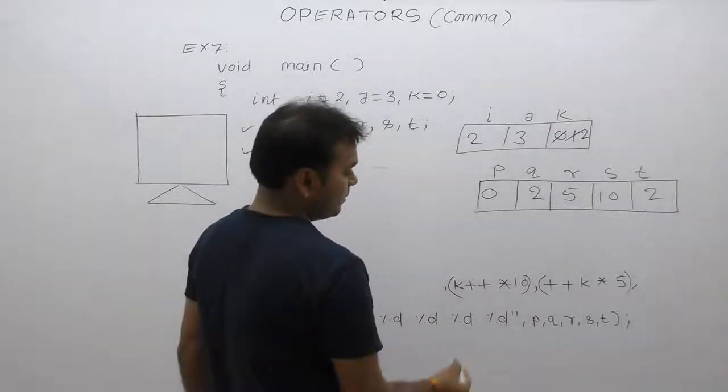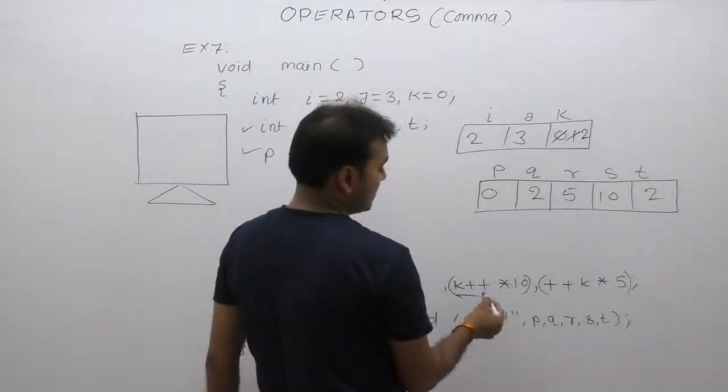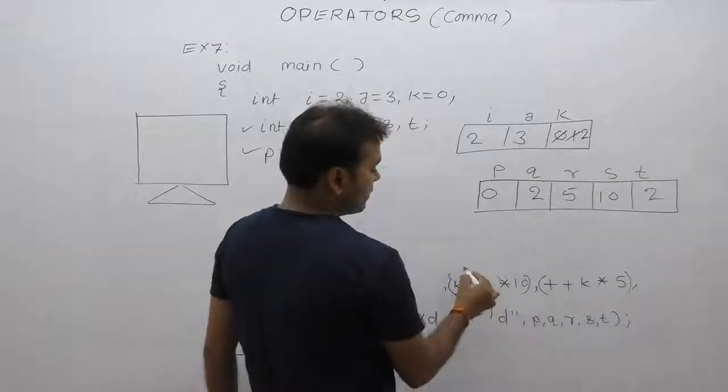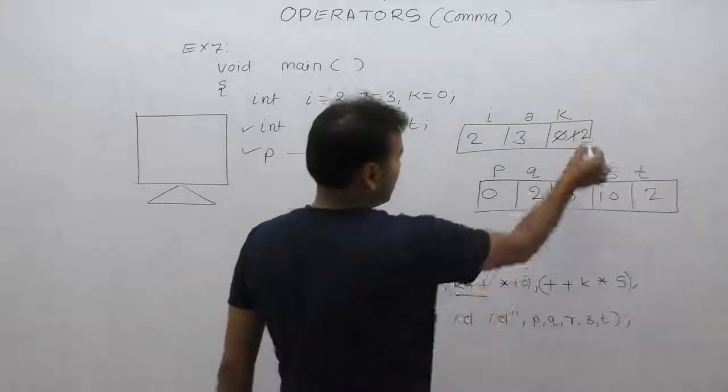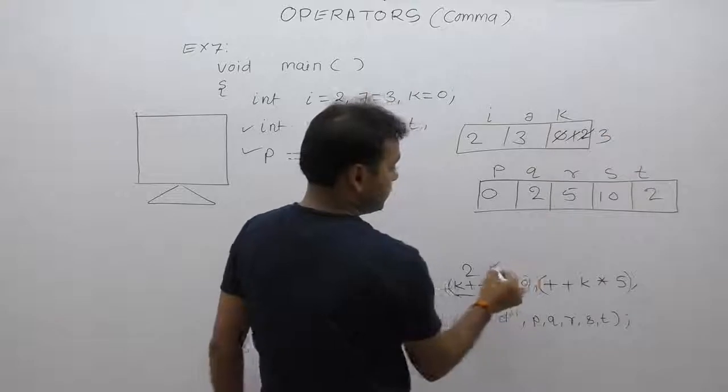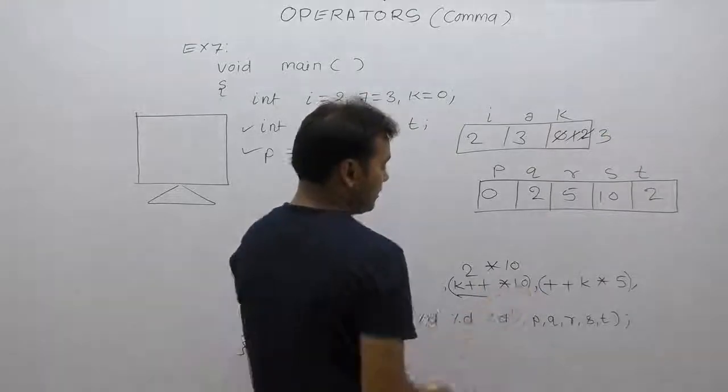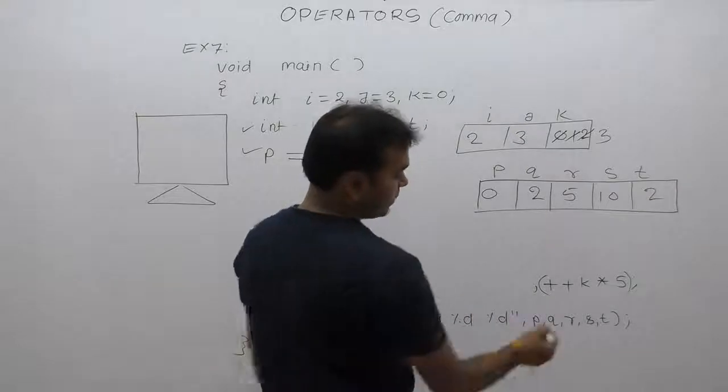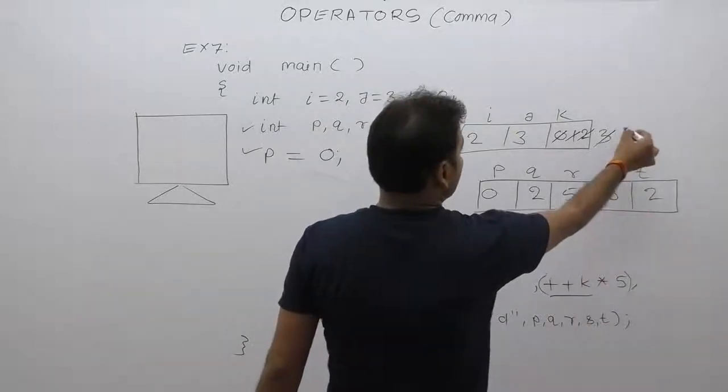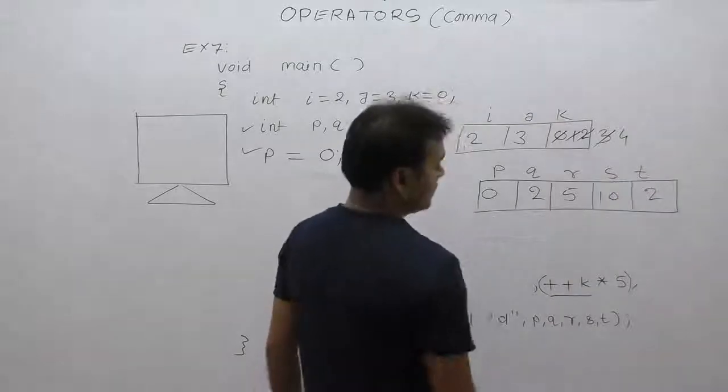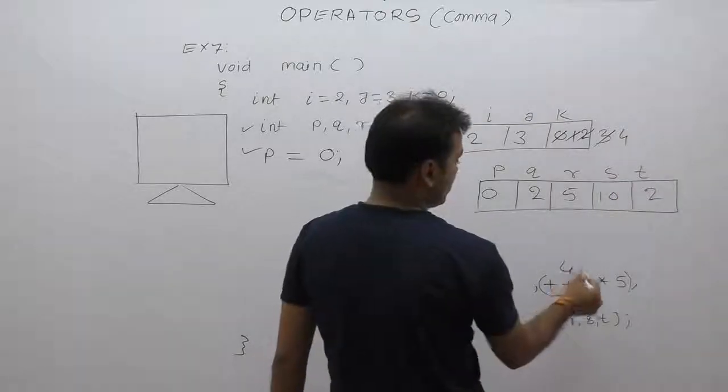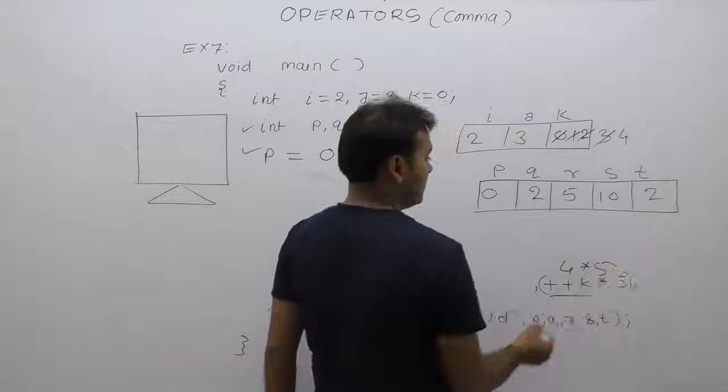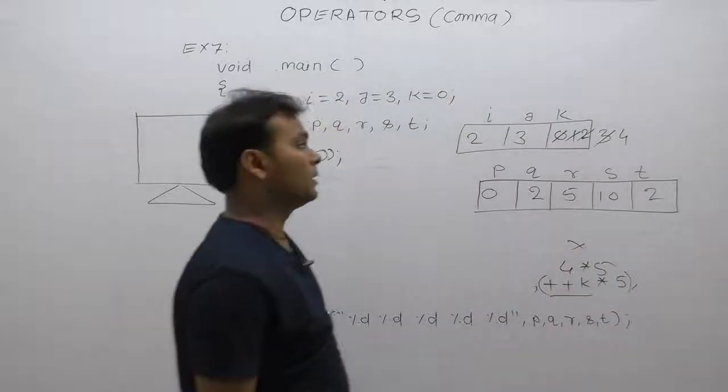Again post, post k replaces 2 then increment k becomes 3. 2 multiply by 10 is 20, but nothing to assign. Again pre, 3 increments k becomes 4. Then replace, 4 multiply by 5 result is 20.